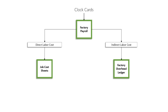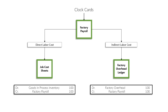Because indirect labor cannot be assigned to a certain job, it's assigned to the factory overhead ledger — just like indirect materials. For direct labor costs, since we know where they are specifically assigned — whether job one, job 51, or job 89 — we put them in that job's job cost sheet. In the ledger, factory payroll will be credited; we transfer the cost to goods in process inventory or to factory overhead in the case of indirect labor.